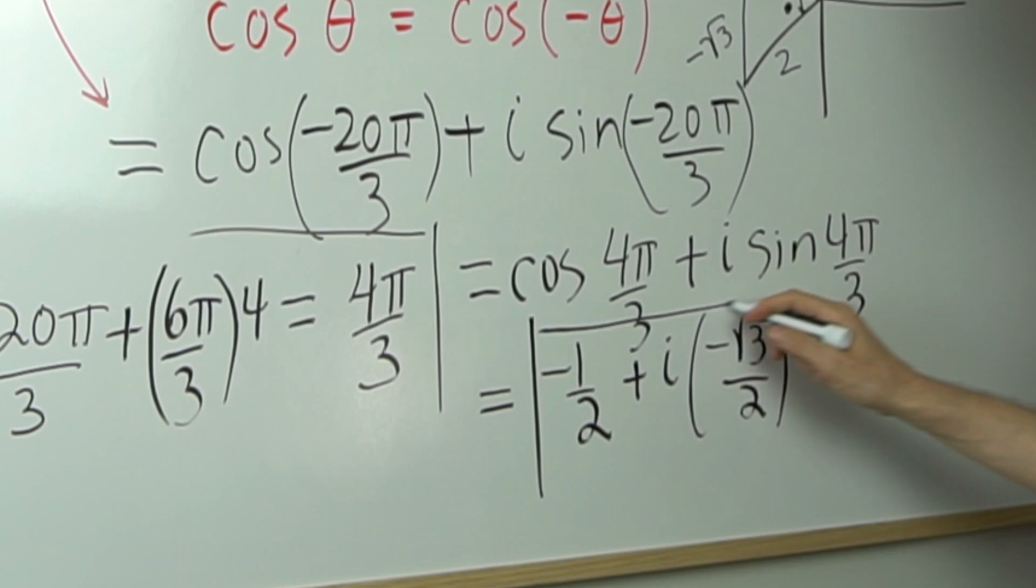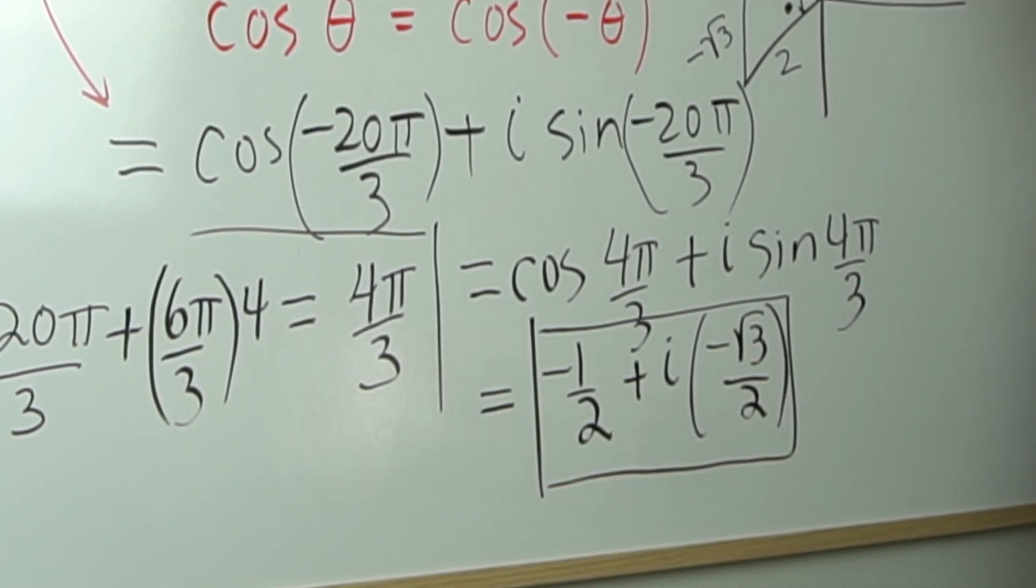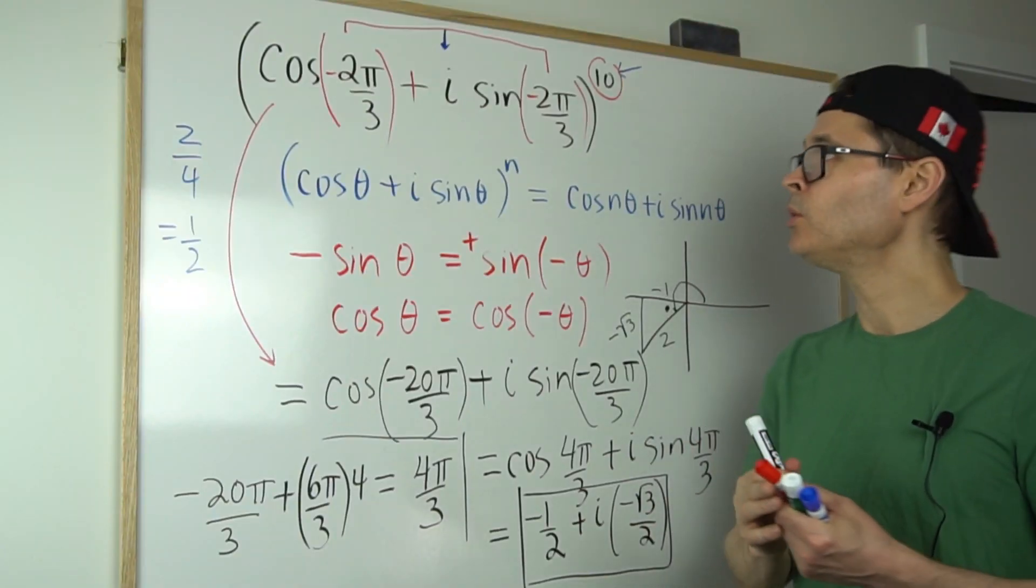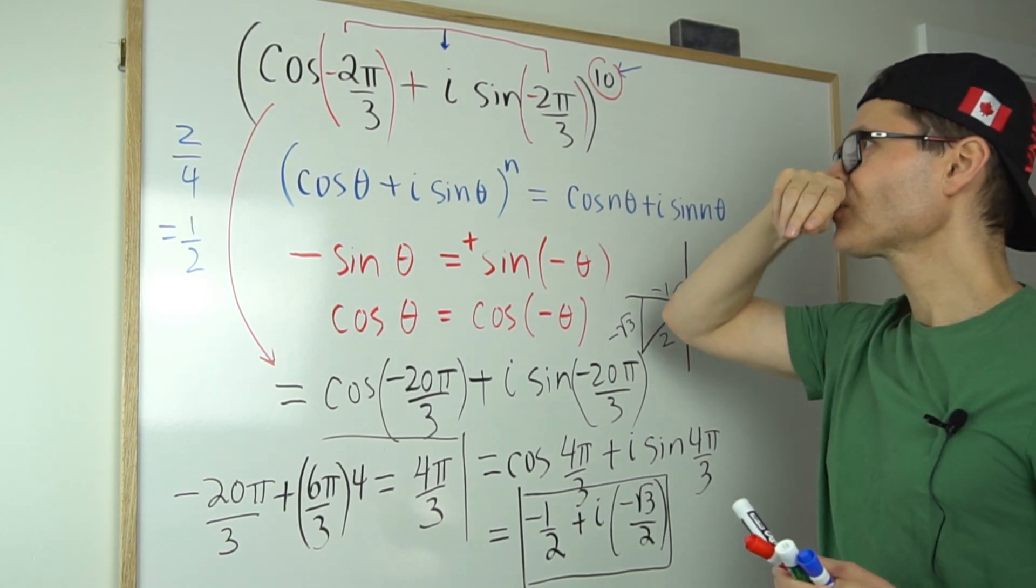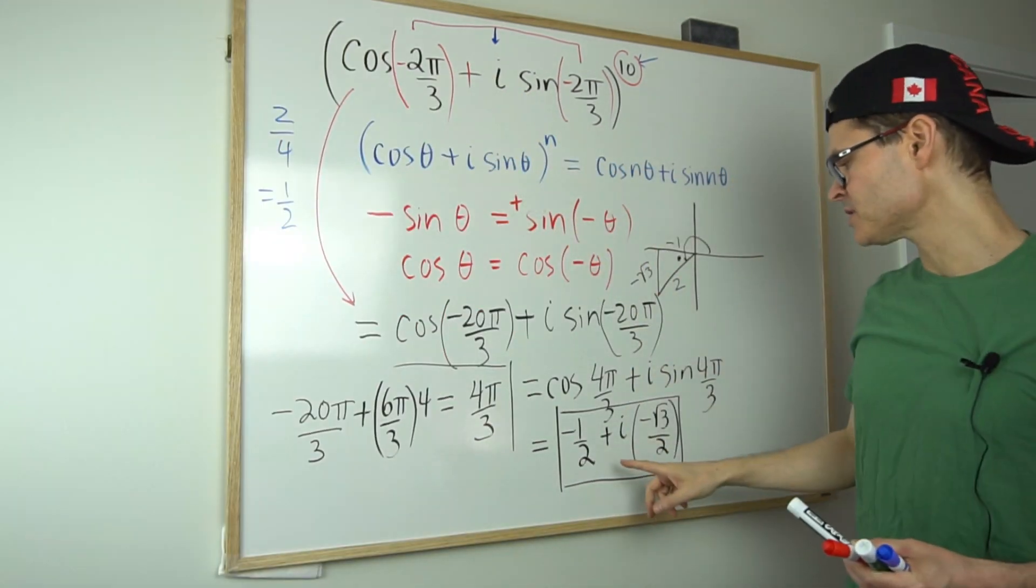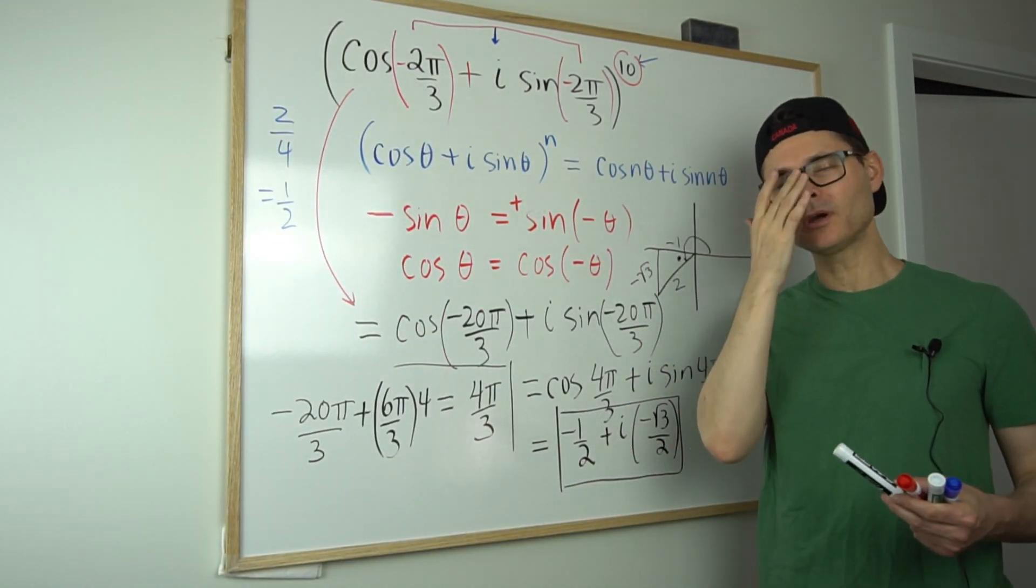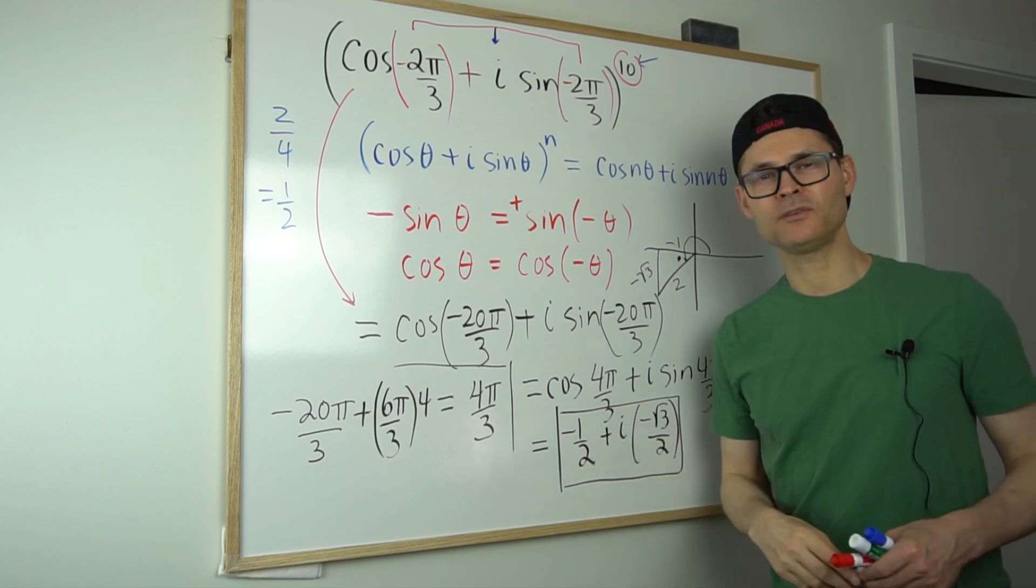And there it is. There's the number. I've got it. I've simplified it. I'm no longer in degree 10. I don't even have any cosines or sines. I've just got a regular old complex number written in Cartesian form.